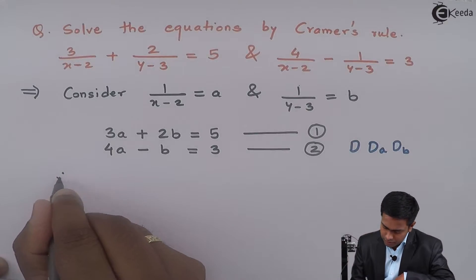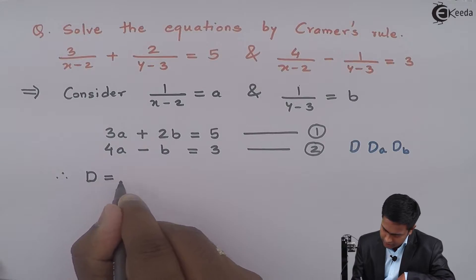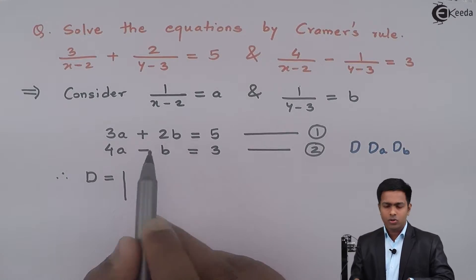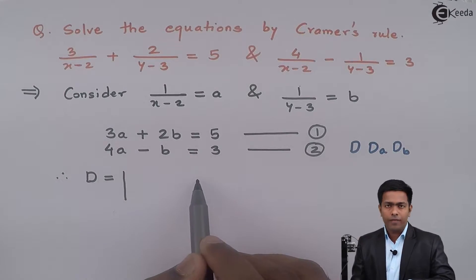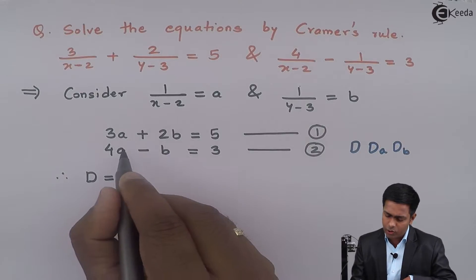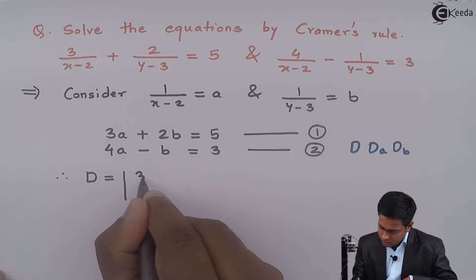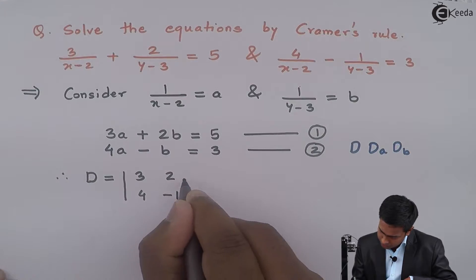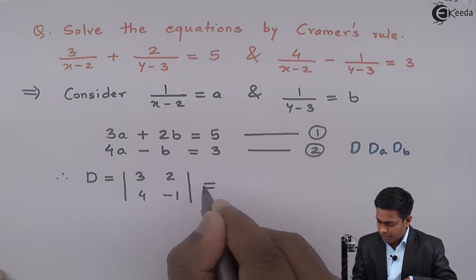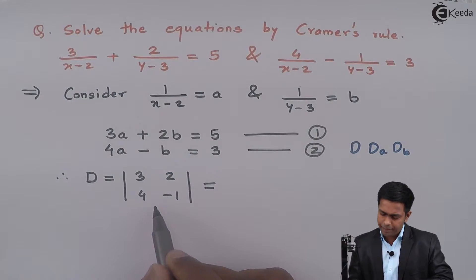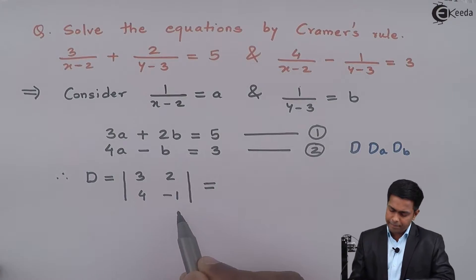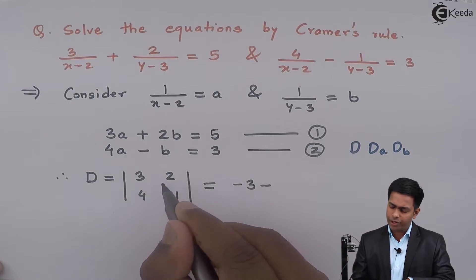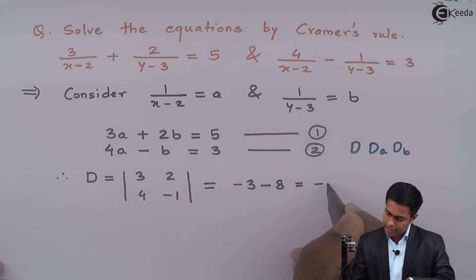D is nothing but the determinant of the coefficients of the variables. Here the variables are A and B. So D will be the determinant of coefficients of A and B. The coefficient of A is 3 and 4, and the coefficient of B is 2 and minus 1. So the 2×2 determinant gives 3 into minus 1, that is minus 3, minus sign, and 4 into 2 that is 8. So we get minus 11.